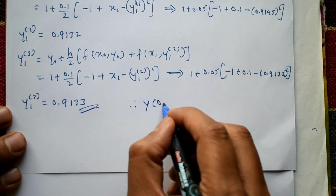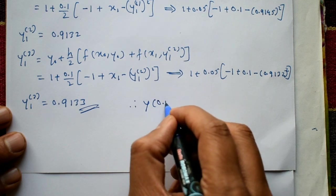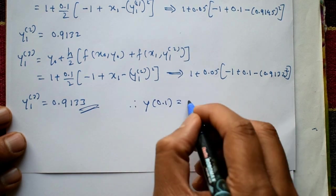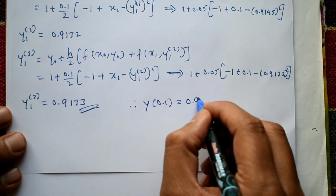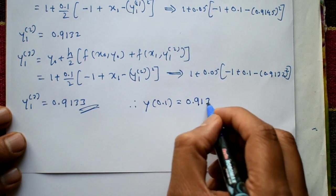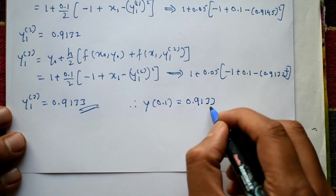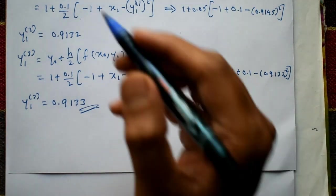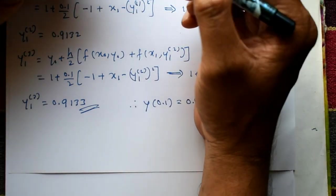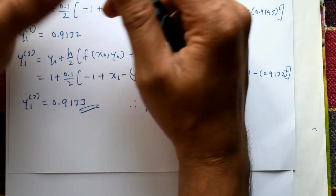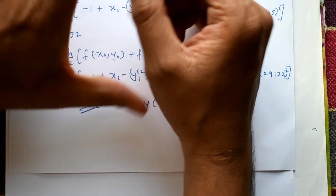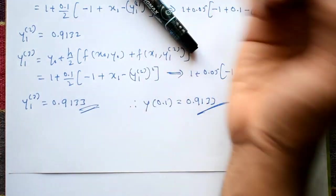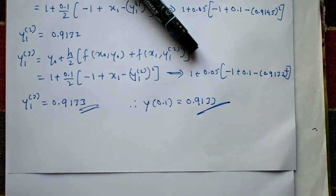Therefore y(0.1) = 0.9133. This is the required solution. Please subscribe to my channel, like, and leave comments. Thank you.